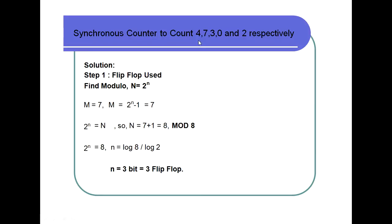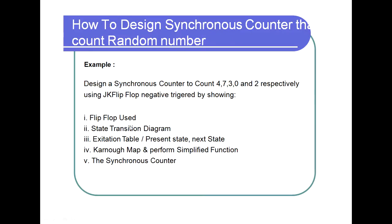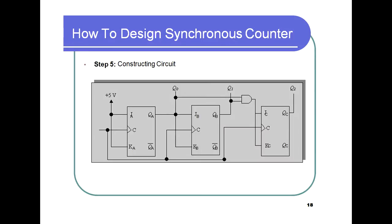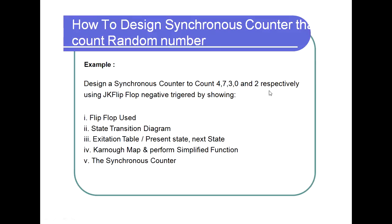For the random sequence counter counting 4, 7, 3, 0, 2: the highest value is 7, so M = 7, giving 2^n = 8, meaning we require three flip-flops. The same methodology — state diagram, excitation table, Karnaugh map, simplified functions — is applied to achieve the desired synchronous counter for random number sequences. Thank you.